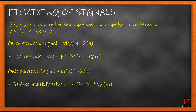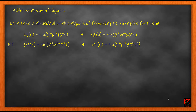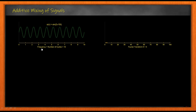We'll look at additive mixing followed by multiplying two signals and taking the Fourier transform. For additive mixing of signals, I'm going to use two sine waves of frequency 10 and 30 cycles. These are the two sine waves and I'm adding them together. After adding I'm going to see what the Fourier transform looks like. From previous lectures it should be known that the Fourier transform of a signal gives a peak equal to the frequency of the signal.